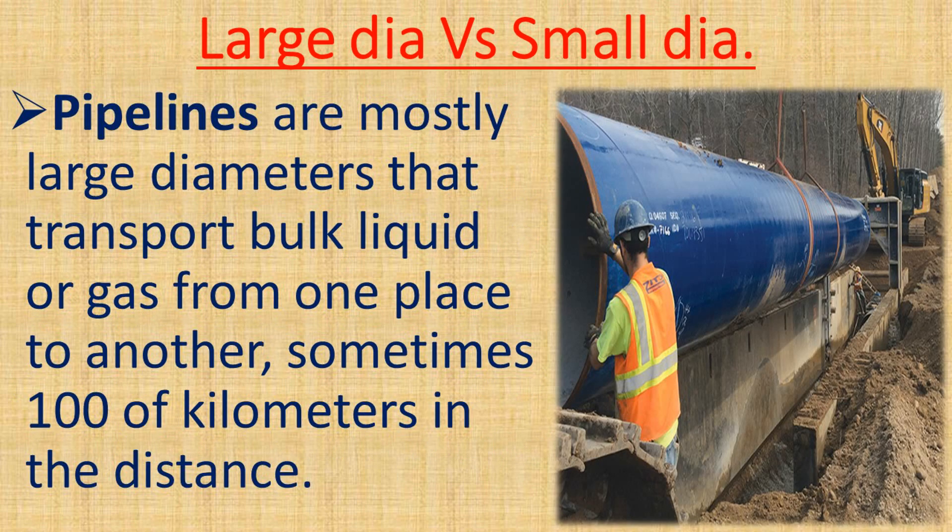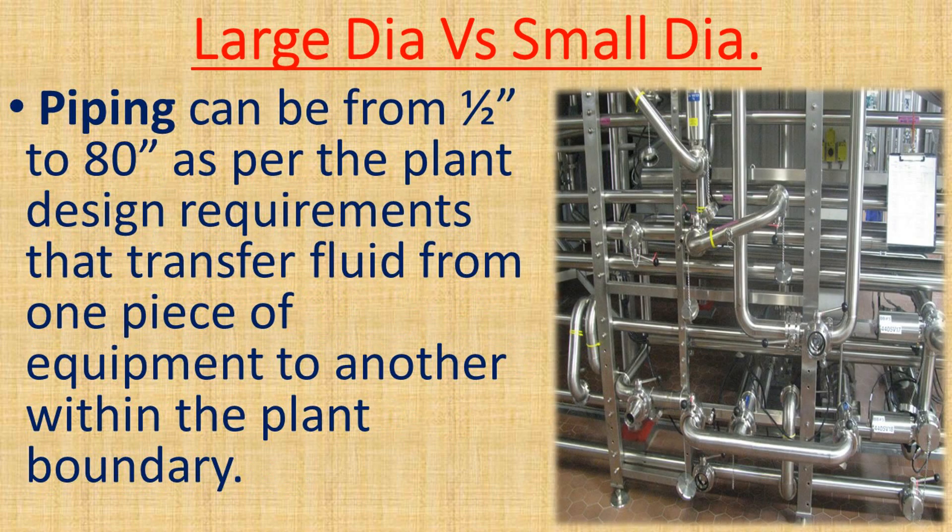Pipelines are mostly large diameter systems that transport bulk liquid or gas from one place to another, sometimes hundreds of kilometers in distance. Piping can range from half inch to 80 inches per the plant design requirements, transferring fluid from one piece of equipment to another within the plant boundary.